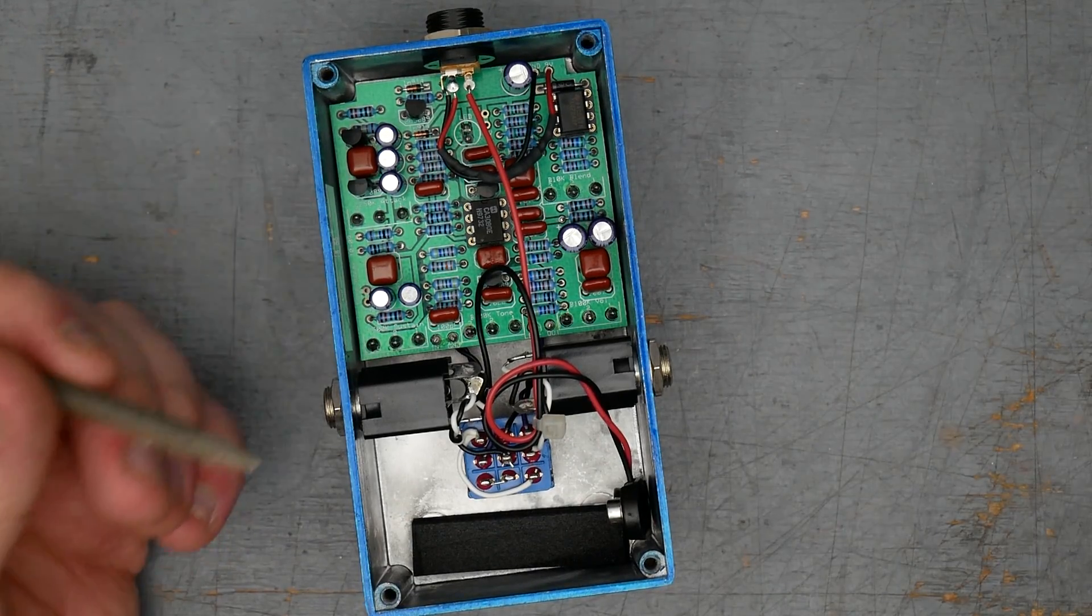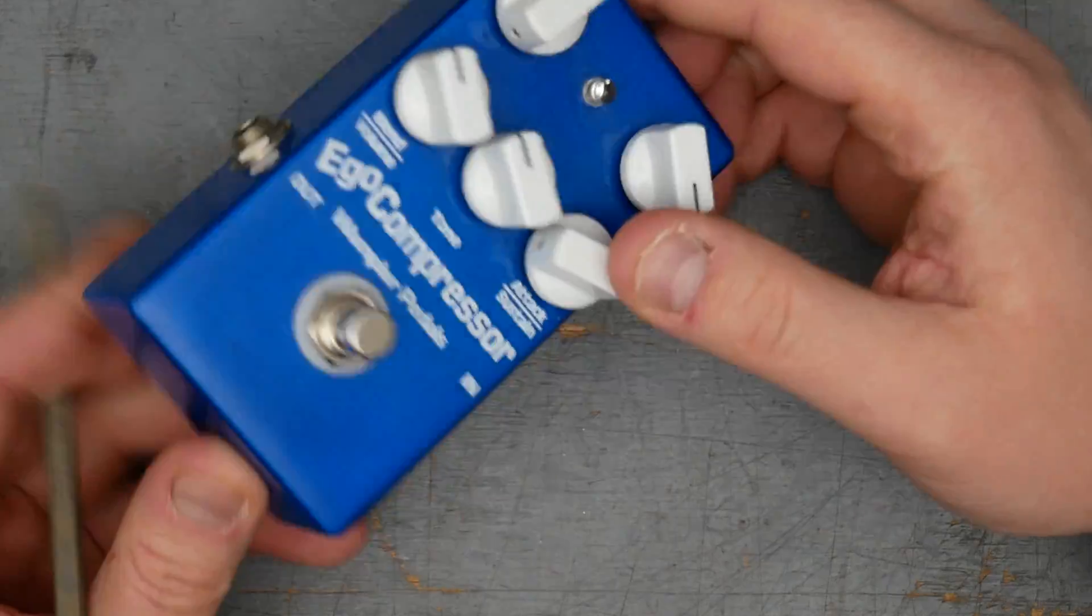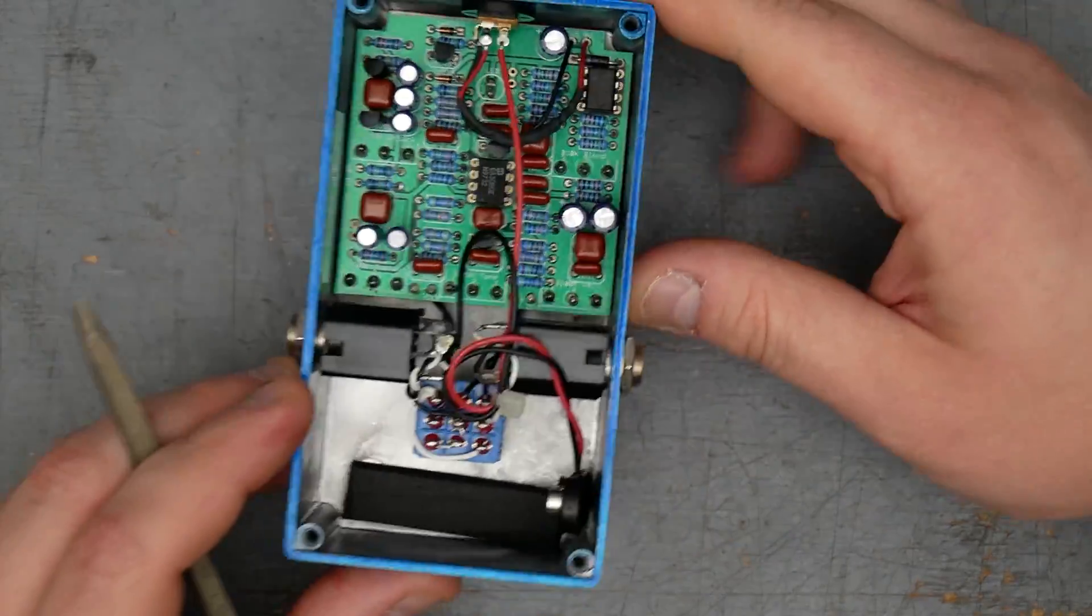ElectroSmash has a much better article, explains it way better than I could. So I'll put a link to that in the description. Go check that out. Other than that, that is the internals of the Wampler Ego Compressor. Let's go ahead and put it back together.